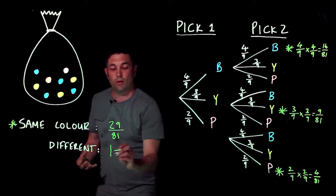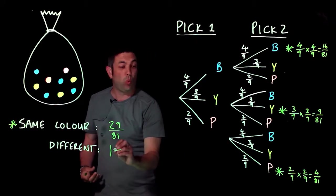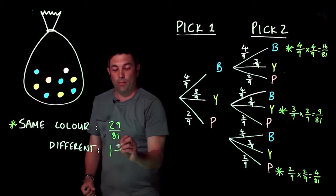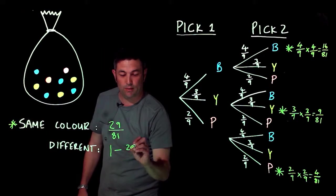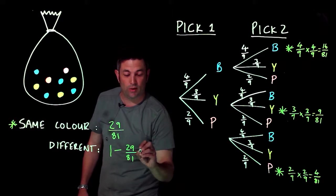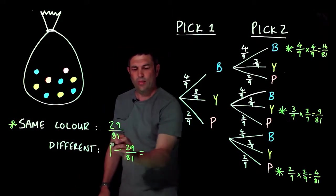So if I take one minus the probability of the same color, I'm going to end up with the probability of getting two different colors. So that looks a bit nasty at the moment, but we should know that one is the same as 81 over 81.